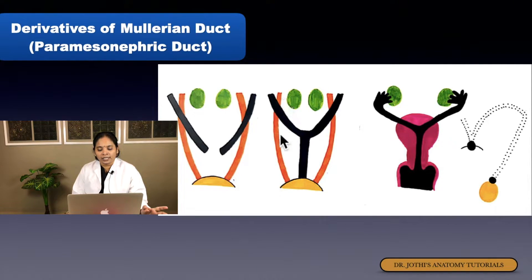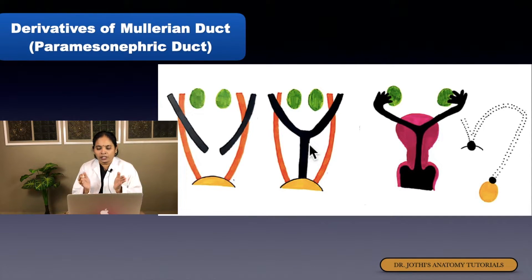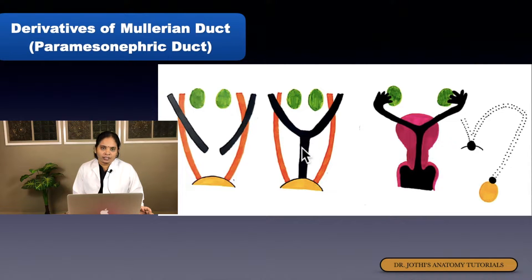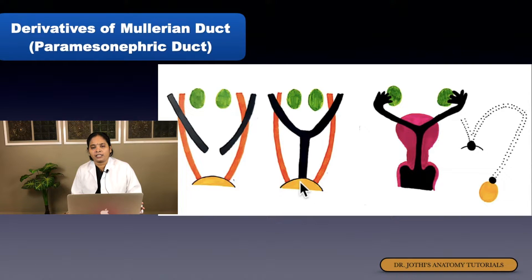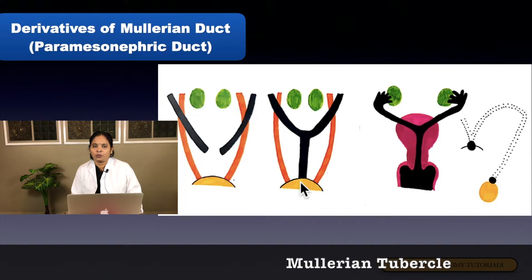The mesonephric duct enters directly into the urogenital sinus. Both ducts initially enter the urorectal septum and lie adjacent to each other. They come into close contact with each other at the eighth week of intrauterine life. Both paramesonephric ducts fuse with each other to form one canal — the uterovaginal canal. Before their fusion, as they pass through the urorectal septum and enter the urogenital sinus, they form one elevation called the Mullerian tubercle.